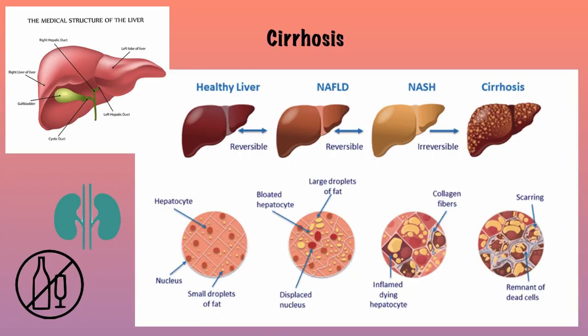Lastly, cirrhosis is the result of chronic scarring and damage to the liver, usually due to kidney disease, hepatitis, or chronic alcoholism. A healthy liver filters harmful substances from your blood and sends healthy blood into your body. As substances damage the liver, scar tissue forms, which forces the liver to work harder to function properly, and eventually the liver may stop working.